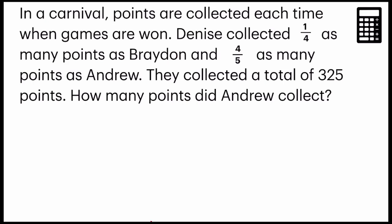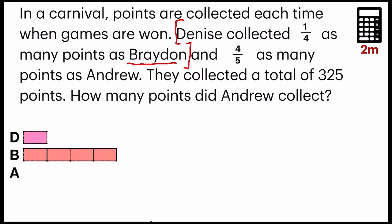Let's take a look at this sentence. They are trying to say that Brayden has one whole chunk. Imagine Brayden has one whole chunk and Denise has one quarter of what Brayden has. So Brayden would have this entire chunk here and Denise has one unit.